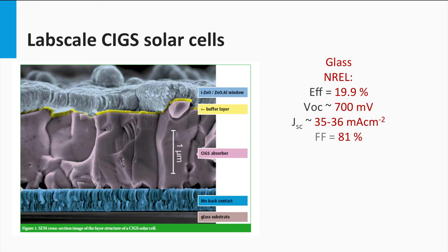An important advantage of the CIGS PV technology is that on lab scale it has achieved the highest conversion efficiencies among the thin film solar cells. Lab scale CIGS solar cells processed on glass have a record efficiency of 19.9% as achieved by National Renewable Energy Lab in the US.